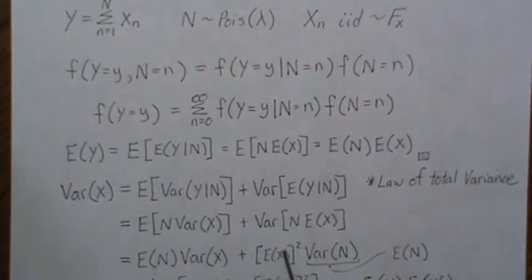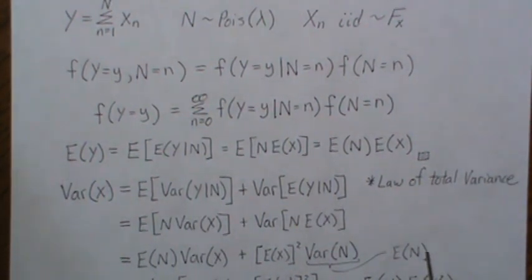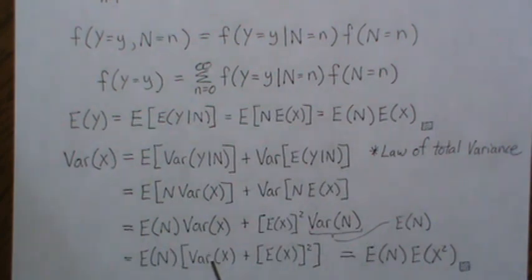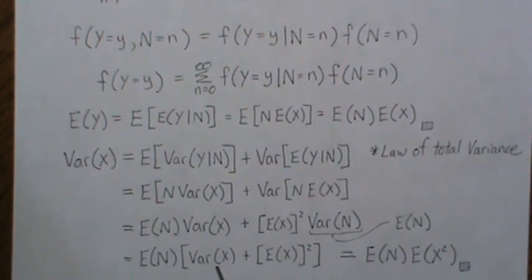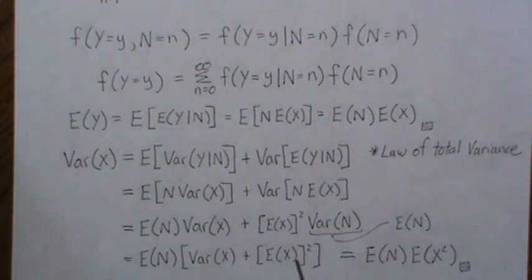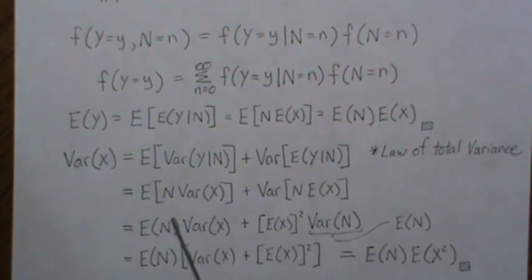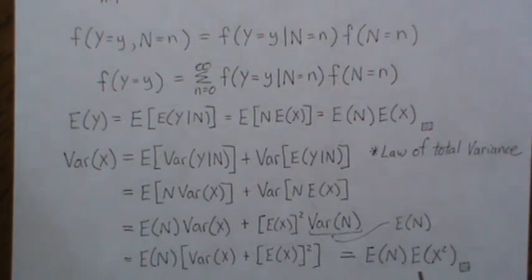Combining, we get: expected value of N times variance of X, plus the mean of X squared times variance of N. Since N is Poisson, its variance equals its mean (lambda), so we can replace variance of N with its mean and factor it out. The variance formula E[X²] − (E[X])² means those squared terms cancel, and we're left with the expected value of X squared. So generically, the variance of a compound Poisson distribution is lambda times E[X²].